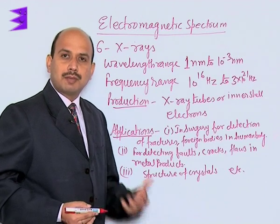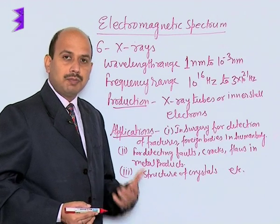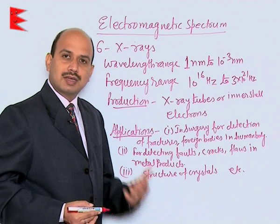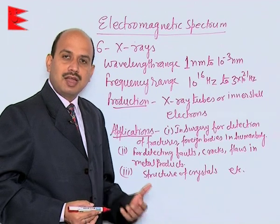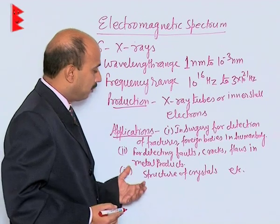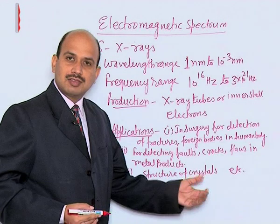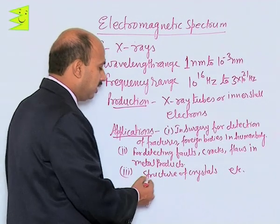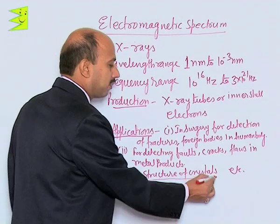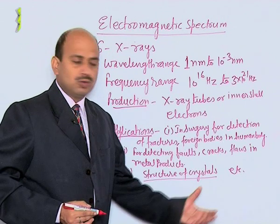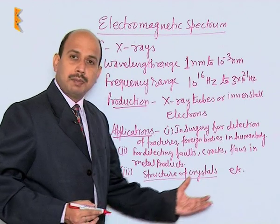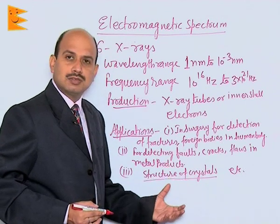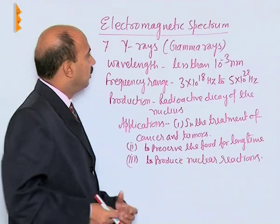Whenever metal products are made, the final products are checked — if there are any flaws or cracks inside the metals, that is done by using X-rays. X-rays are also used for studying the structure of crystals, and so on. There are many more applications besides these three, but these three are the main applications.